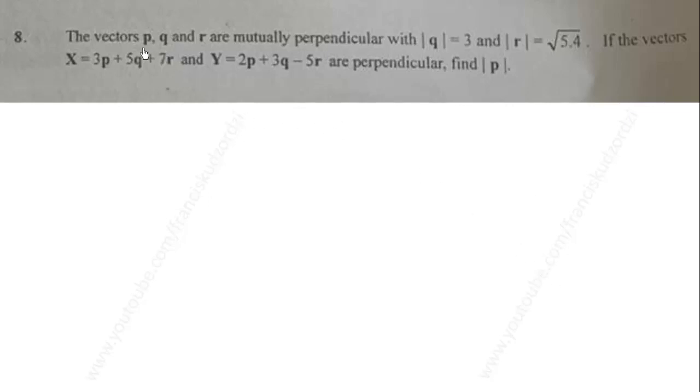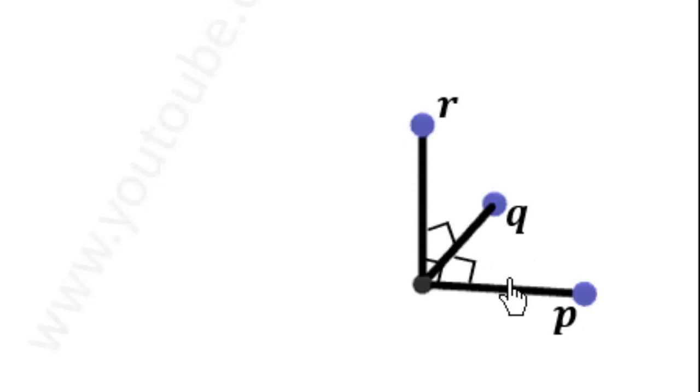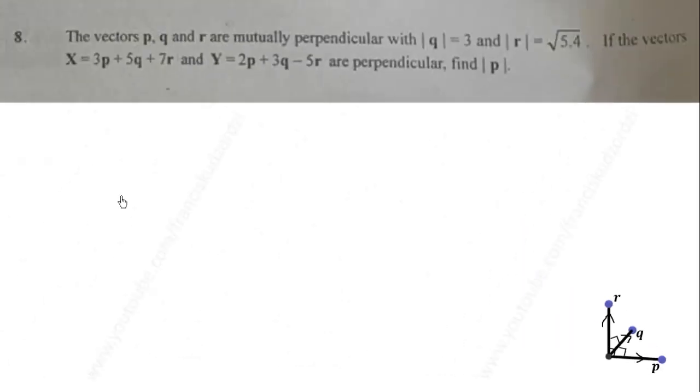P, Q, and R being mutually perpendicular means we have two vectors P and Q that are perpendicular to each other, and a third vector R is perpendicular to both P and Q. That is the meaning of mutually perpendicular vectors. Now we can proceed with our solution.